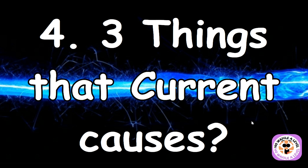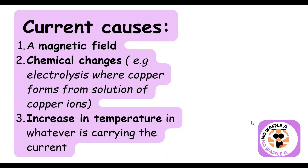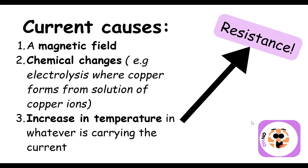Part four: three things that current causes. First, a magnetic field. Second, chemical changes — for example, electrolysis of ionic solutions. Third, an increase in temperature in whatever is carrying the current. That temperature increase has the effect of producing resistance, which leads us to part five.